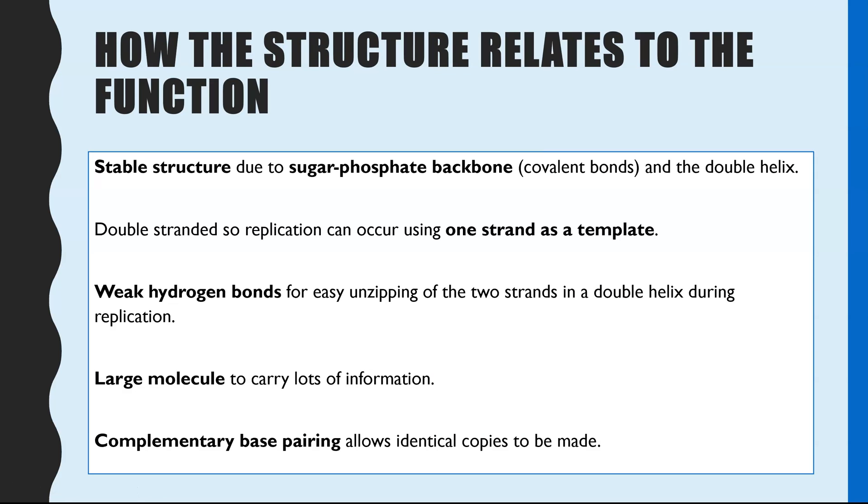So the first thing links back to the covalent bonds, those phosphodiester bonds, and that is one of the key things that makes it a stable structure. So those phosphodiester bonds create this sugar-phosphate backbone, and you then get a double helix forming. And because of that double helix, that then means the strong covalent bonds are on the outside of the helix and the weaker hydrogen bonds are in the middle of the helix, but they're protected by the stronger bonds on the outside.